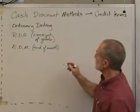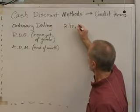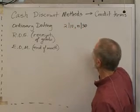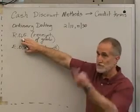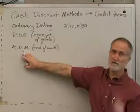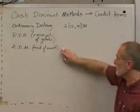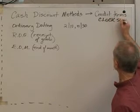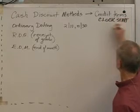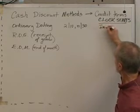The example we used before was 2/10 net 30. That is ordinary dating because it doesn't have ROG after it and it doesn't have EOM after it. And the only difference among these three is when does the clock start. The clock starts in ordinary dating on the invoice date.